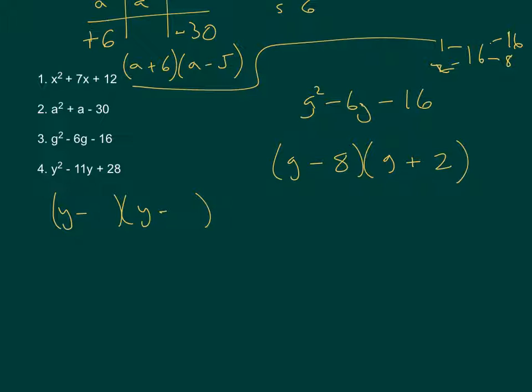So they're both going to be negative, and we need to find the two factors of 28 that we'll subtract to give 11. So we've got 1 and 28. That would give us minus 29. 2 and 14 would give us minus 16. 3 isn't a factor of 28. 4 and 7. Minus 4 minus 7 would give us minus 11.